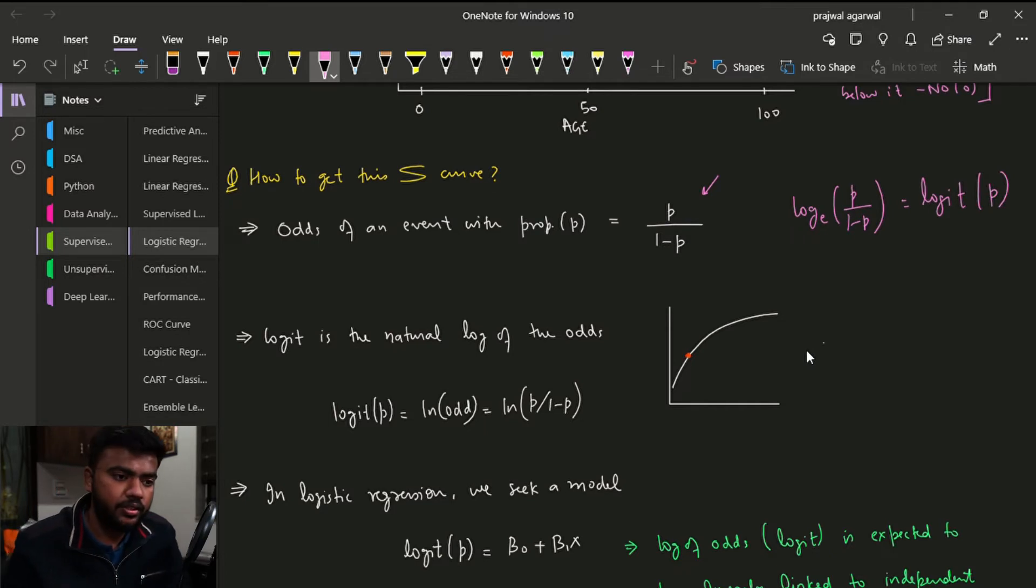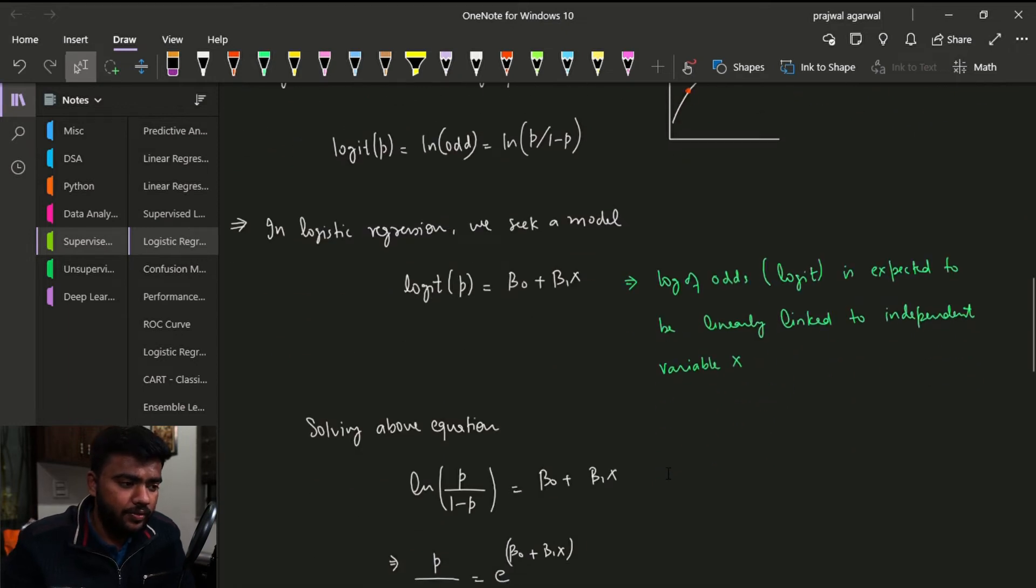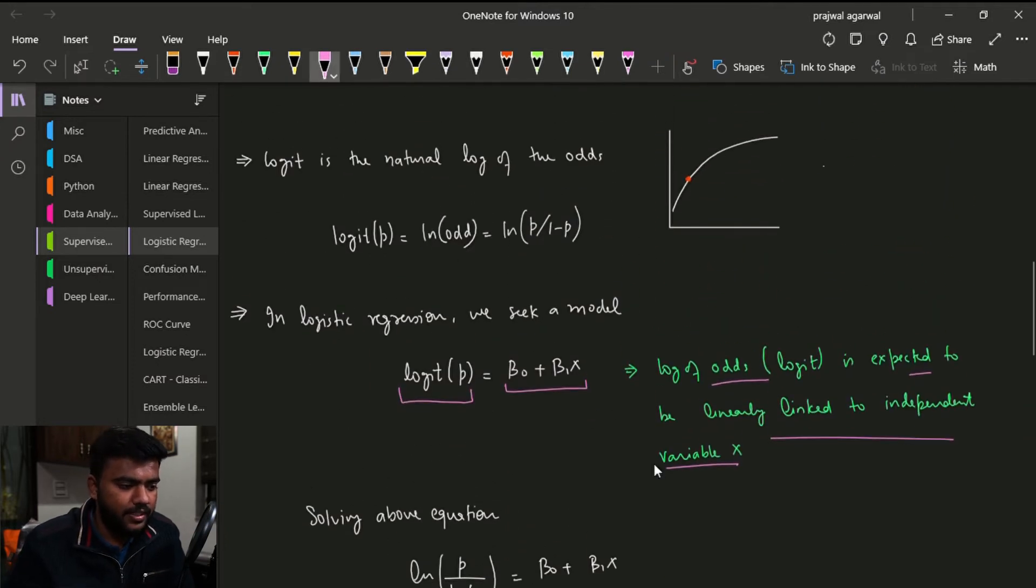And this is also equal to this expression. Now in logistic regression, all we do is we just equate our simple linear regression's equation with logit of p. The log of odds logit is expected to be linearly linked to the independent variable x.